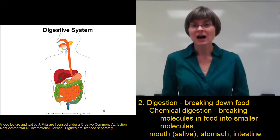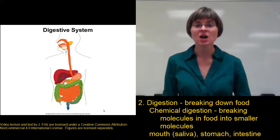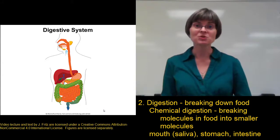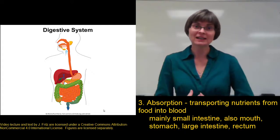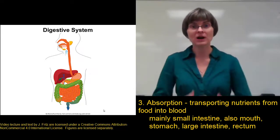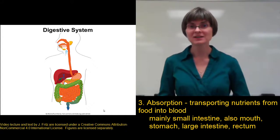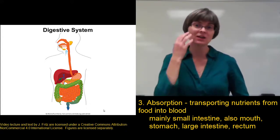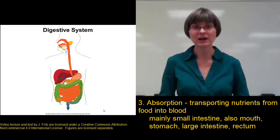Once our food has been chemically digested into small enough pieces, we encounter the next function of the digestive system, which is absorption — to absorb the nutrients out of the digestive tract and get them into the blood so they can go around to the rest of the body. Most absorption takes place in the small intestine, although some absorption can occur in the mouth, in the stomach, in the large intestine, and even in the rectum.